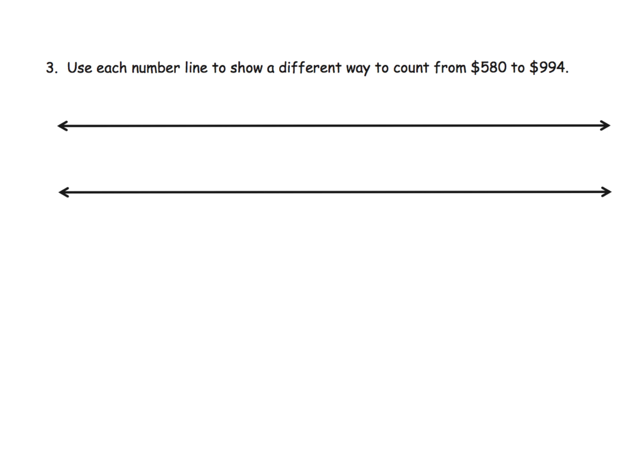Now here it says use these two number lines to show a different way to count from 580 to 994. So the idea would be we have 580 right here, we have 994 right here.